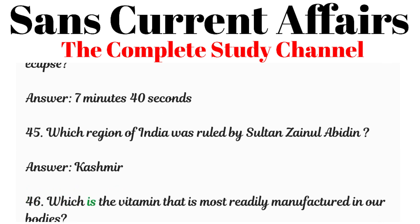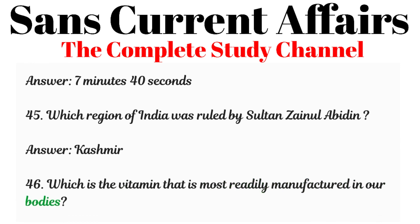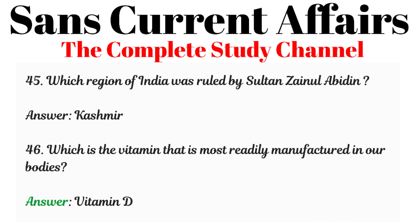Question 46: Which is the vitamin most readily manufactured in our bodies? Answer: Vitamin D.